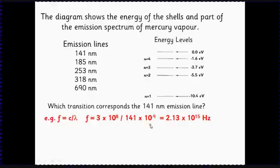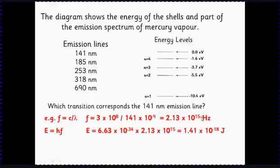This gives us a frequency. Second step is to turn that into an energy, so we just do E equals hf to make that into an energy. And then finally, we need to turn that from joules into electron volts by dividing by our conversion factor. And this tells us the energy of that photon is 8.8 electron volts.